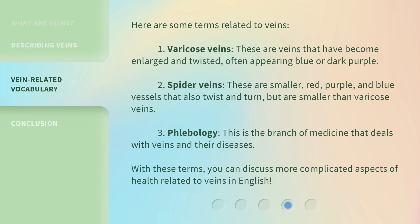Here are some terms related to veins. First, varicose veins — these are veins that have become enlarged and twisted, often appearing blue or dark purple. Second, spider veins — these are smaller red, purple, and blue vessels that also twist and turn, but are smaller than varicose veins. Third, phlebology — this is the branch of medicine that deals with veins and their diseases. With these terms, you can discuss more complicated aspects of health related to veins in English.